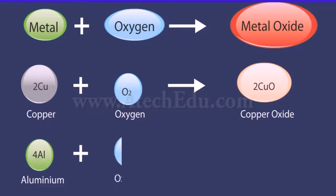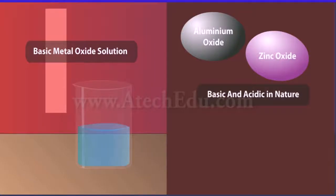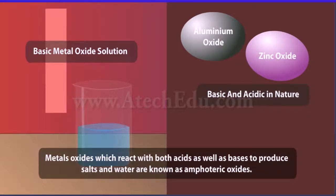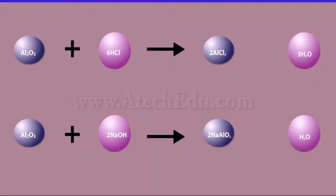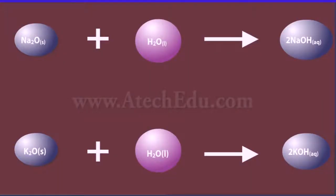Usually, metal oxides are basic in nature, but some metal oxides, such as aluminium oxide and zinc oxide, show both acidic as well as basic behavior. Such metal oxides, which react with both acids as well as bases to produce salts and water, are known as amphoteric oxides. This is how aluminium oxide reacts with acids and bases. Most metal oxides are insoluble in water, but some dissolve in water to form alkalis — sodium oxide and potassium oxide dissolve in water to produce alkalis.